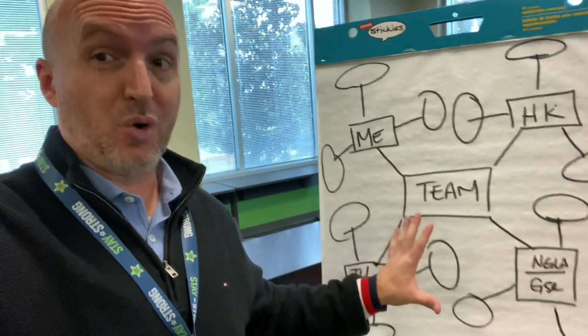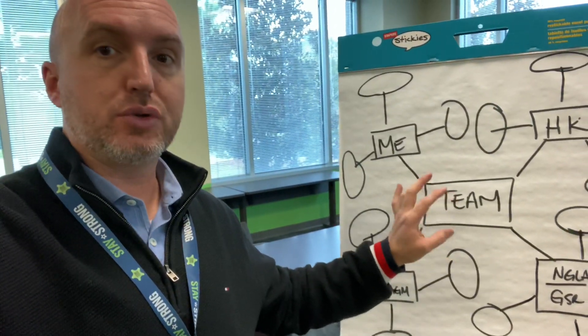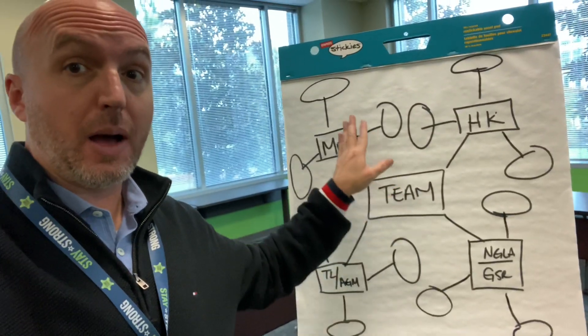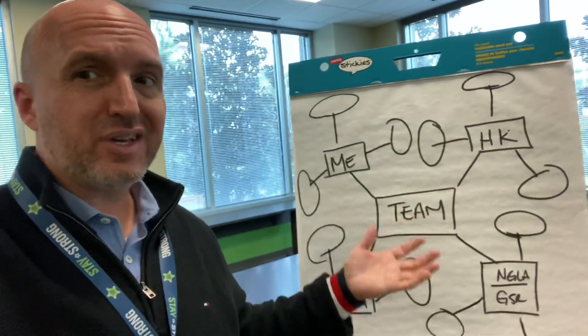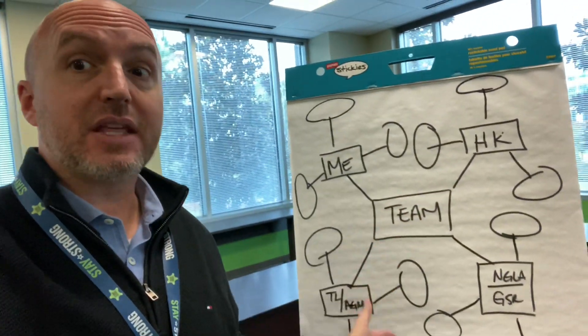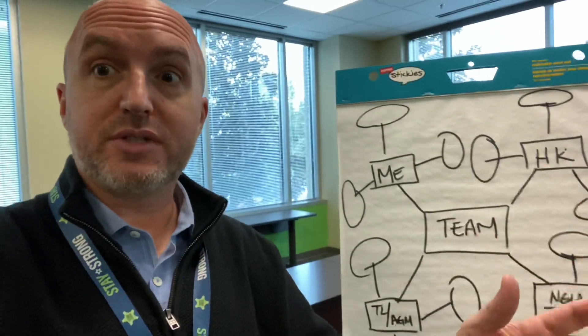I'm just going to leave this open and ask them to tell me anything they know about any of these roles. I'll give them one minute, then ask them to rotate around the room — I have stations set up. There are six trainees, so there'll be two people per station. After one minute, they rotate, see what other people wrote, and add to it. Then rotate one more time, see what others wrote, and add to it.